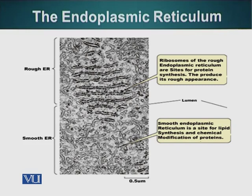For example, if a protein molecule has to go to lysosomes, certain carbohydrate molecules will be attached to it. The cellular machinery will recognize this protein, package it in a vesicle, and send that vesicle to the lysosome.